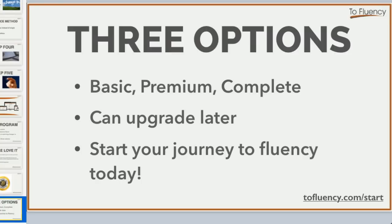Remember, you get lifetime access and can keep this course for life, with all lessons available straight away. You can go quickly or slowly — it's up to you. For Basic and Premium, you can upgrade later. If you want to test the course at the lowest price, get Basic. If you want more options, get Premium. If you want everything, including bonus lessons and the speaking evaluation, get Complete. Go to tofluency.com/start, choose the program that's best for you, and sign up.